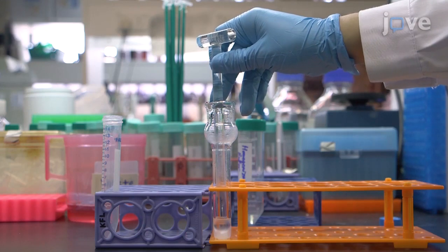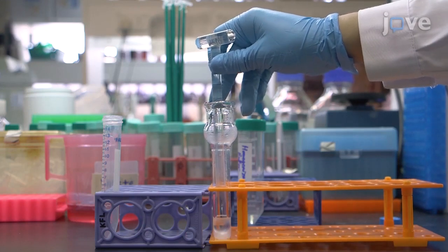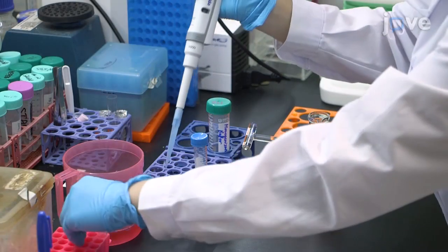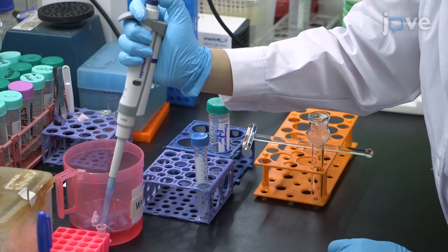Homogenize the cells with a Downs homogenizer using 15-20 strokes, then transfer the homogenate to a 2 mL centrifugation tube.